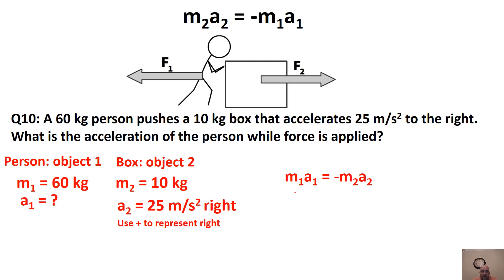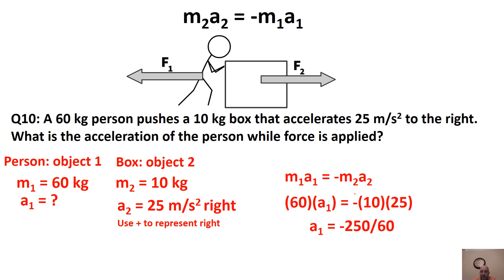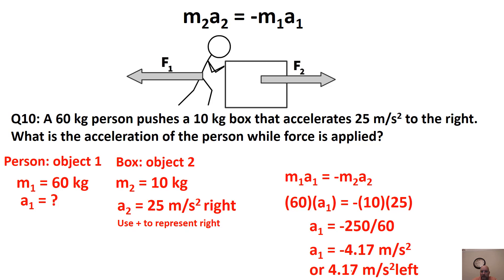Using the equation M1·A1 = −M2·A2 and plugging in: 60·A1 = −(10)(25) = −250. Dividing both sides by 60, we get A1 = −4.17 meters per second squared. Since positive represented right, the negative means the person accelerates at 4.17 meters per second squared to the left.